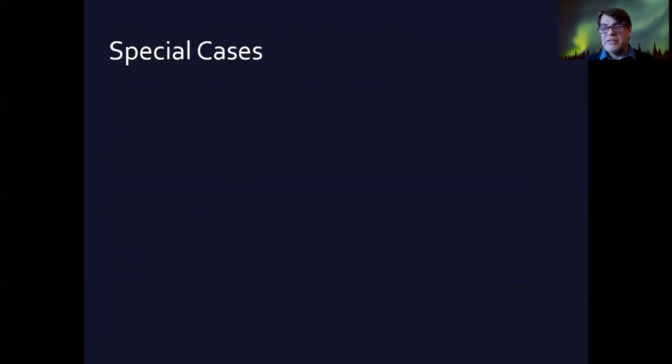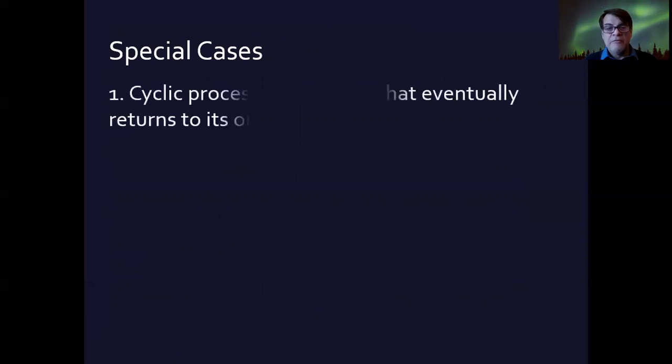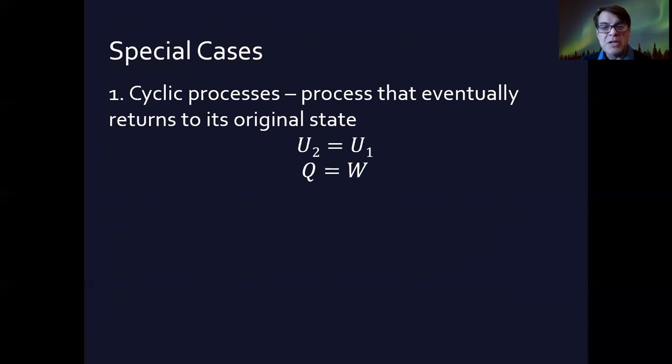There are some special cases that might be mentioned. For example, there are cyclic processes. This is where it returns to its original state. And of course, if the final state is the same as the initial state, that means that U2 equals U1, which means that the amount of heat equals the amount of work, which means that there is a delta U equals zero, right? Because there's no change in internal energy. The example given in the book is of someone who expends as much energy throughout the day as they eat. And so their total amount of heat, calories consumed Q equals the amount of work that they've done through the day. And so they don't gain any weight. They don't lose any weight. So that's a cyclic process. Now, of course, I'm sure that it's never exactly the same. And those of us like me who like to eat, probably tend to have a positive change in internal energy, unfortunately.